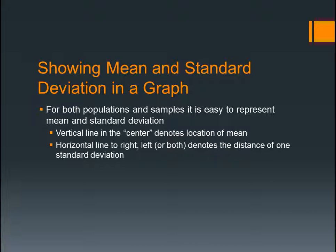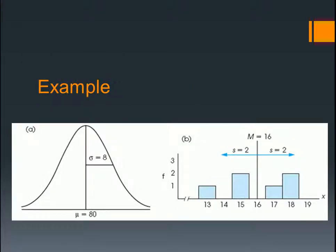Showing mean and standard deviation in a graph. For both populations and samples, it is easy to represent mean and standard deviation. A vertical line in the center — where the center of the distribution is — denotes the location of your mean. And a horizontal line to the left, right, or both denotes the distance of one standard deviation. Here's an example: you've got your mean at the vertical line, denoted at 80, and sigma — your standard deviation — has a value of 8 on this frequency distribution. On this other graph, your mean is at 16 in the middle and your standard deviation is 2.